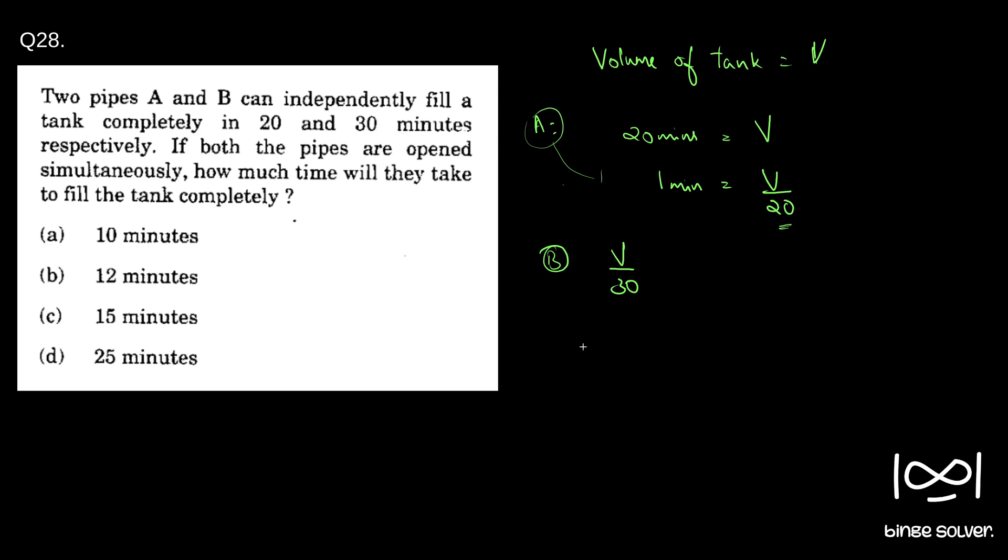So if the pipes are opened simultaneously in one minute, how much volume gets filled? V by 20 gets filled by A and plus V by 30 will get filled by B. So if you take V by 20 plus V by 30, LCM is 60. So we will get 3V plus 2V.